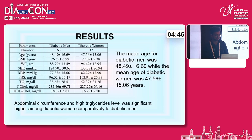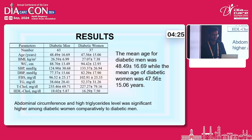My results: among the main parameters, there were 63 diabetic men and 37 diabetic women. The mean age for diabetic men was 48, while the mean age of diabetic women was 47. Abdominal circumference and triglyceride level were significantly higher among diabetic women compared to diabetic men.